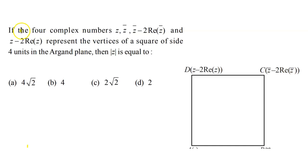Hello everyone, we have a question: if the four complex numbers z, z bar, z bar minus 2 times the real part of z, and z minus 2 times the real part of z represent the vertices of a square of side 4 units in the Argand plane, then modulus of z is equal to what?